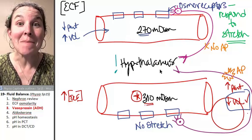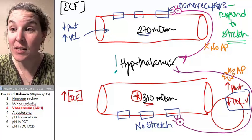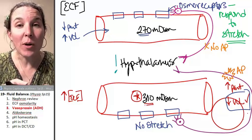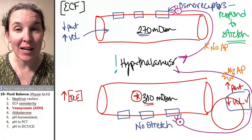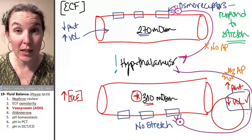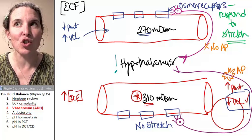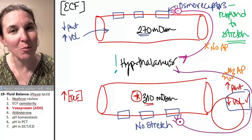Vasopressin is made by the hypothalamus. Do you remember this? Vasopressin is also known as antidiuretic hormone. It's produced in the hypothalamus. It's stored in posterior pituitary.